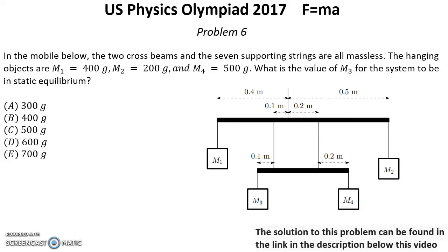Problem number six. In the mobile below, the two cross beams and the seven supporting strings are all massless. The hanging objects are M1 equal 400 grams, M2 equal 200 grams, and M4 equal 500 grams. What is the value of M3 for the system to be in static equilibrium?